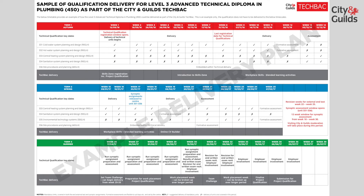In week 18, City and Guilds will release the requirements for the final synoptic assessment. This window of opportunity is now open and you will have 12 weeks for your learners to complete this practical assessment. But we suggest you wait until week 26 to start the synoptic assessment, to allow for completion of delivery and preparation for assessment.